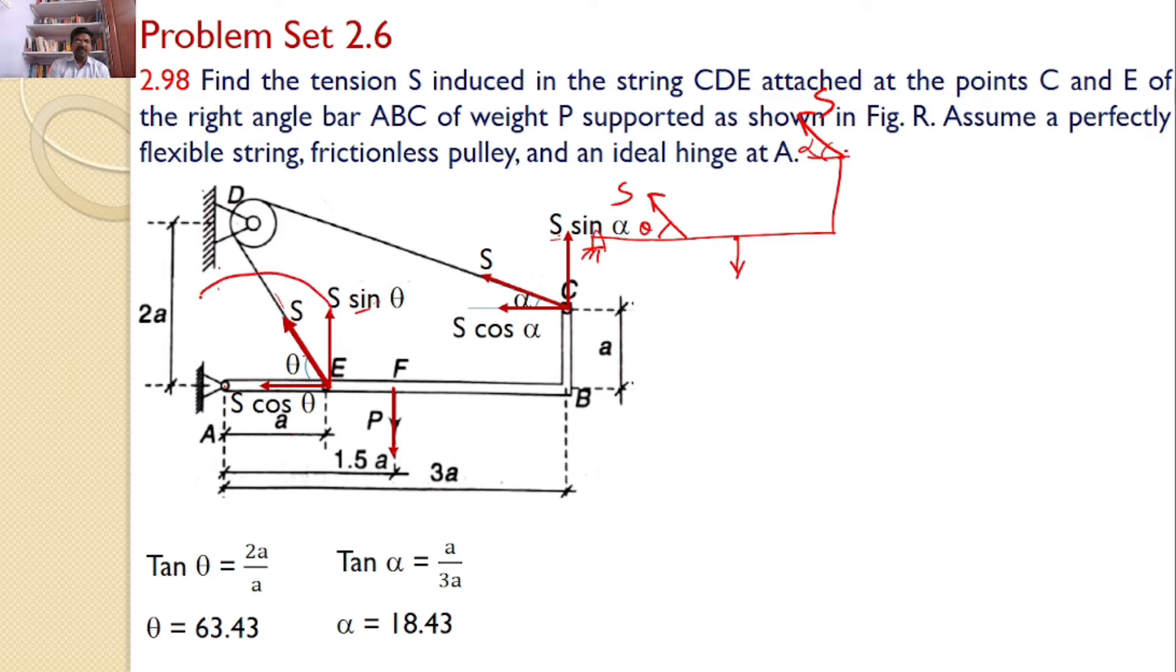So S sin theta will introduce a moment in the counterclockwise, S sin alpha will introduce a moment counterclockwise and P will introduce a moment in the clockwise. And coming to distances, S sin theta line of action is at a distance of small a and P line of action is at a distance of 1.5a. This distance is also known. And this S sin alpha is at a distance of 3a.